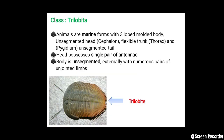The second class, Trilobita: animals are marine forms with a three-lobed body. The body has an unsegmented head called the cephalon, a flexible trunk (thorax), and a pygidium (unsegmented tail). The head possesses a single pair of antennae and the body has numerous pairs of unjointed limbs. Example is trilobite.